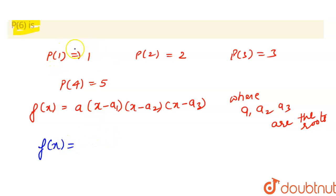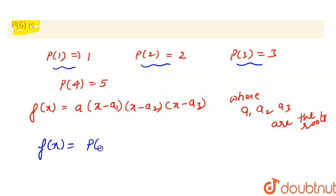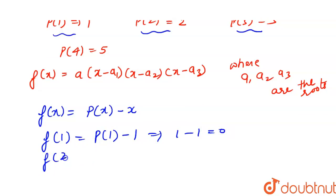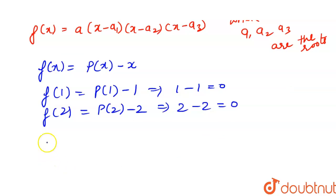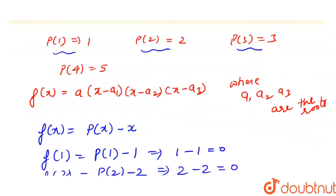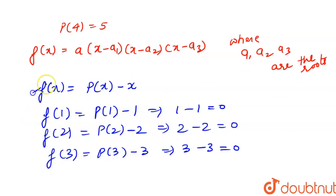Now let's consider a function f(x) such that after putting the values we get 0. We can see that at p(1)=1, p(2)=2, p(3)=3. Using these three relations, p(x) - x gives us 0 for x = 1, 2, and 3. So f(1) = p(1) - 1 = 0, f(2) = p(2) - 2 = 0, and f(3) = p(3) - 3 = 0. But this does not satisfy p(4). So 1, 2, and 3 are the roots of f(x).